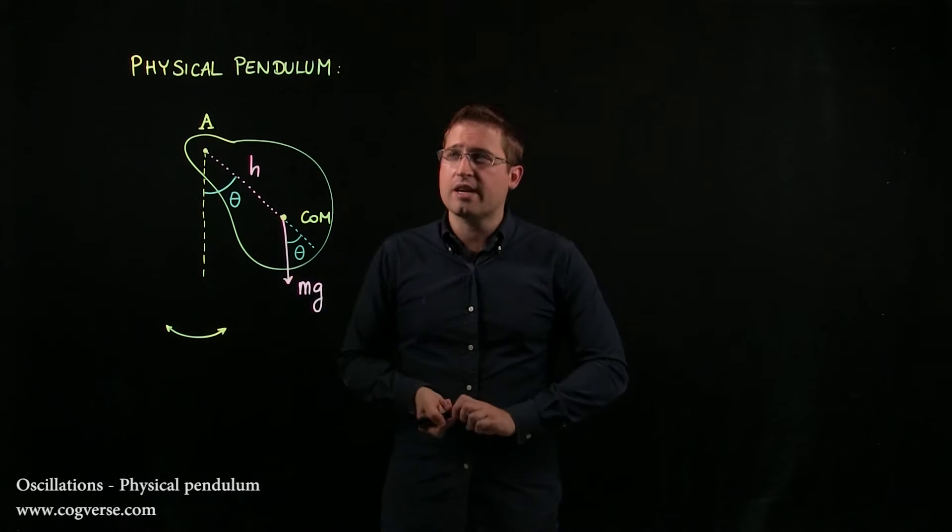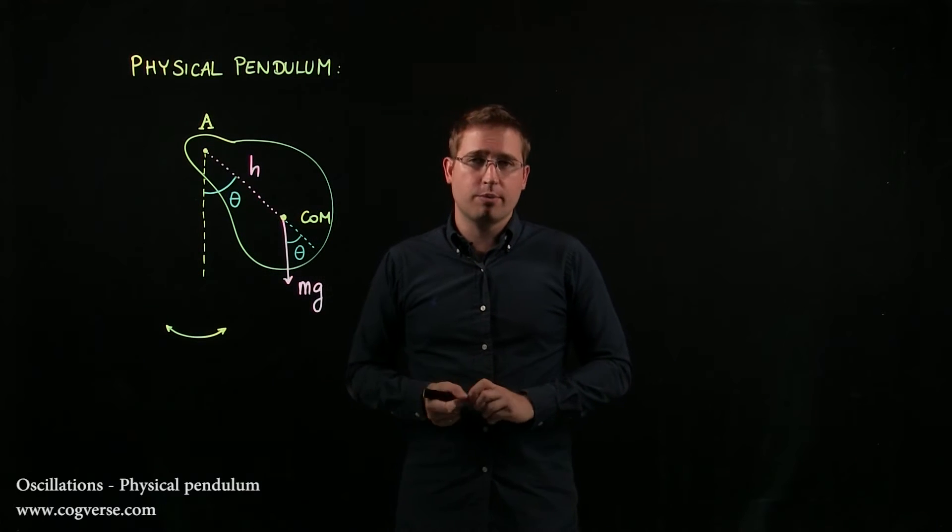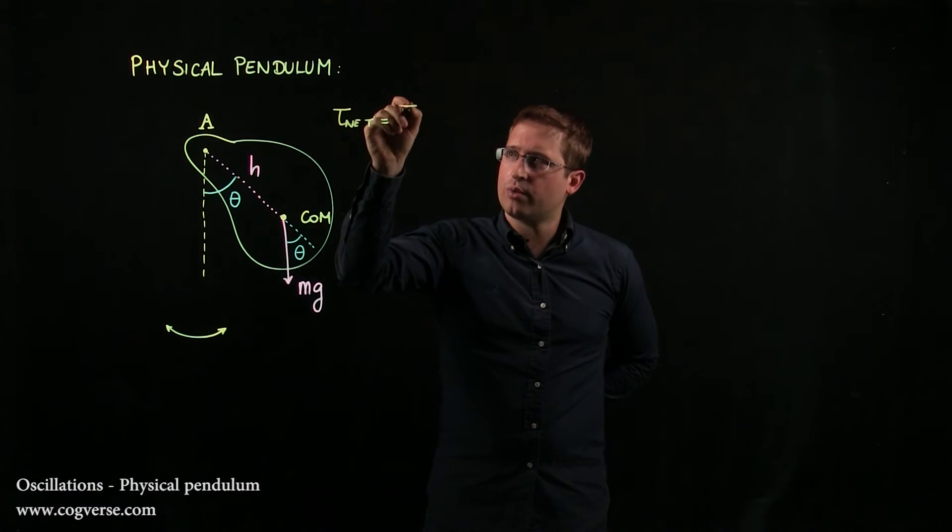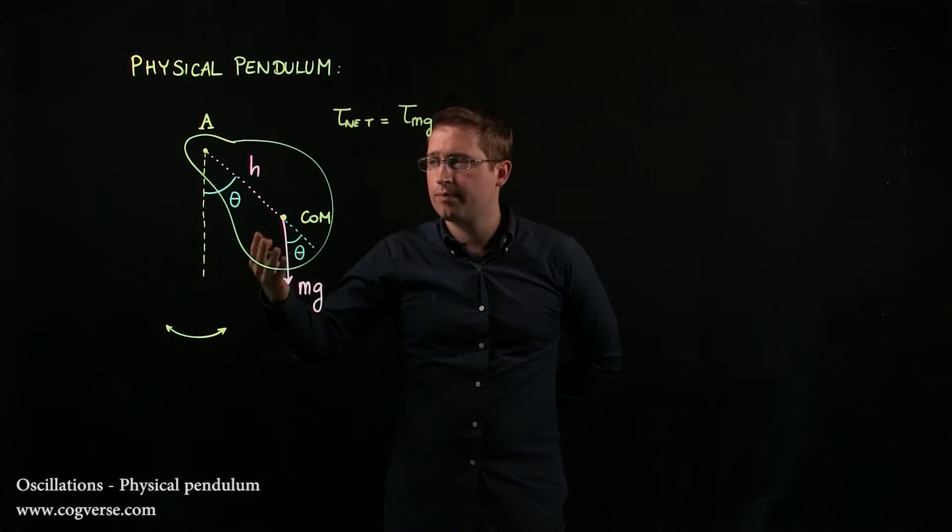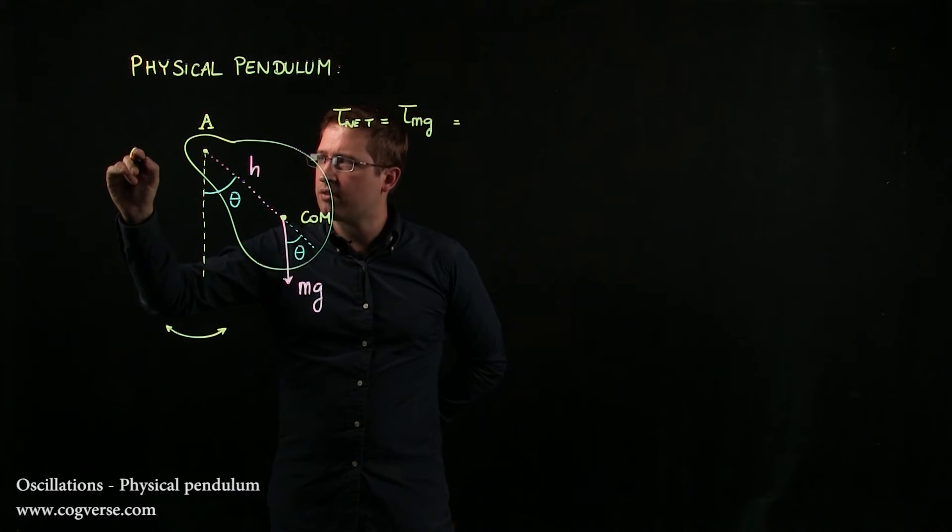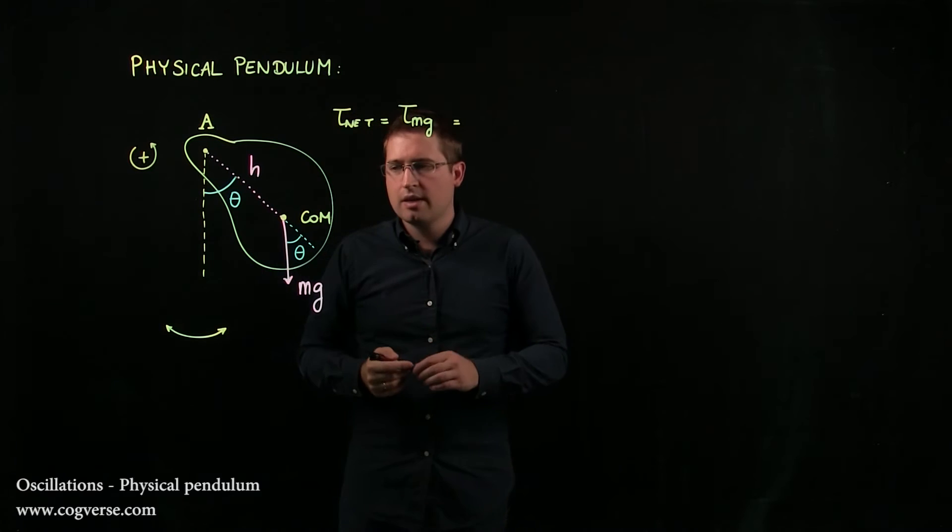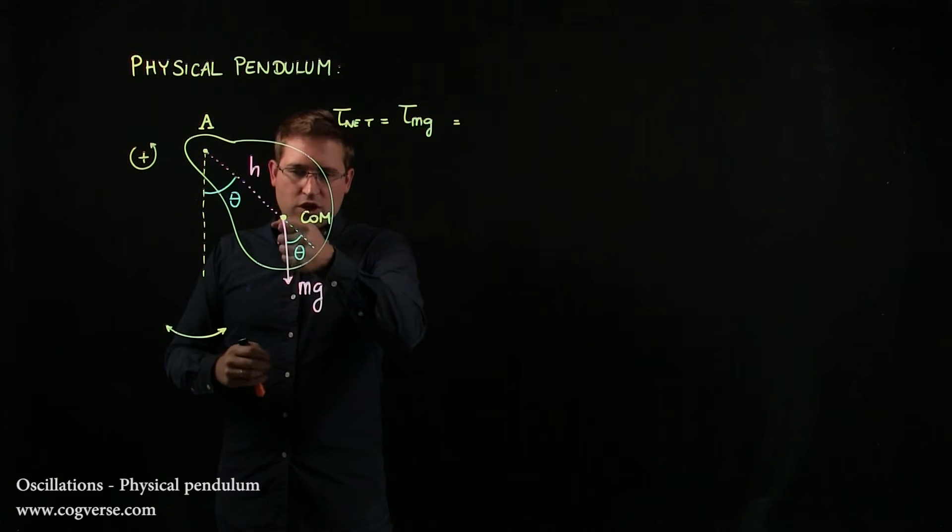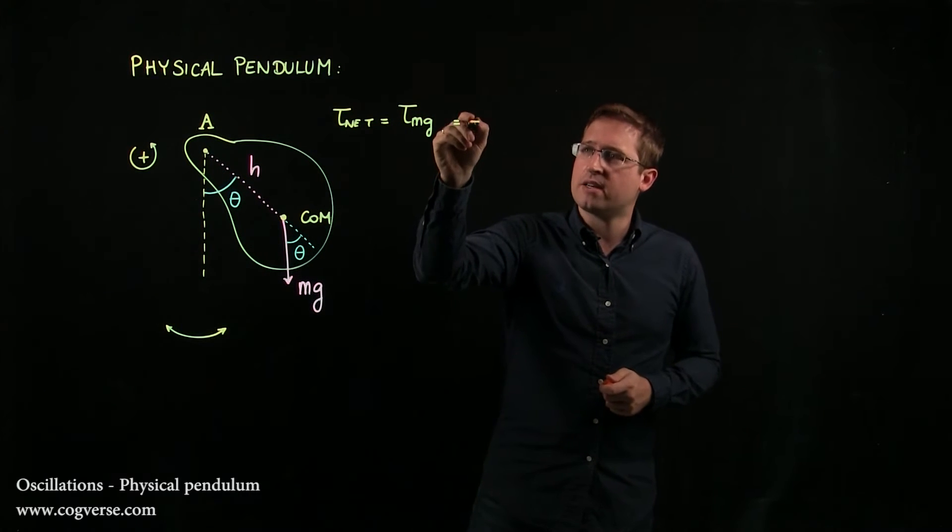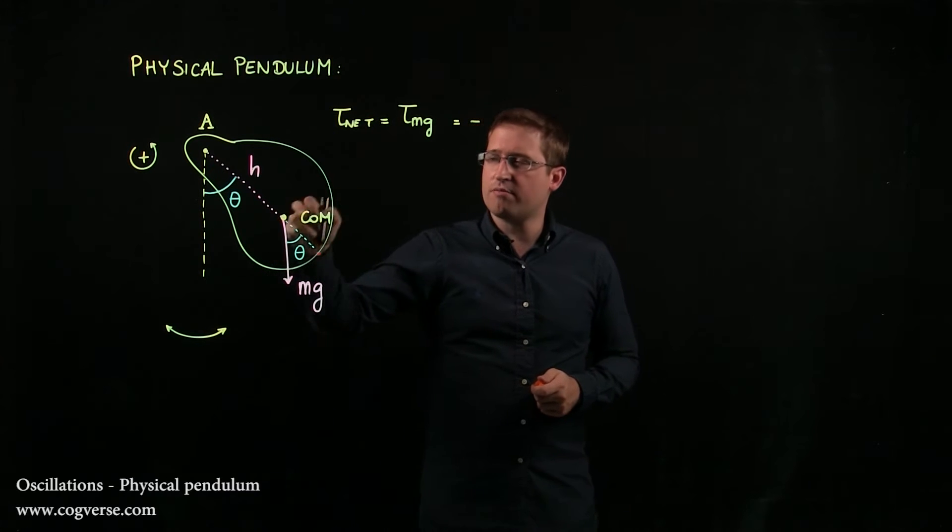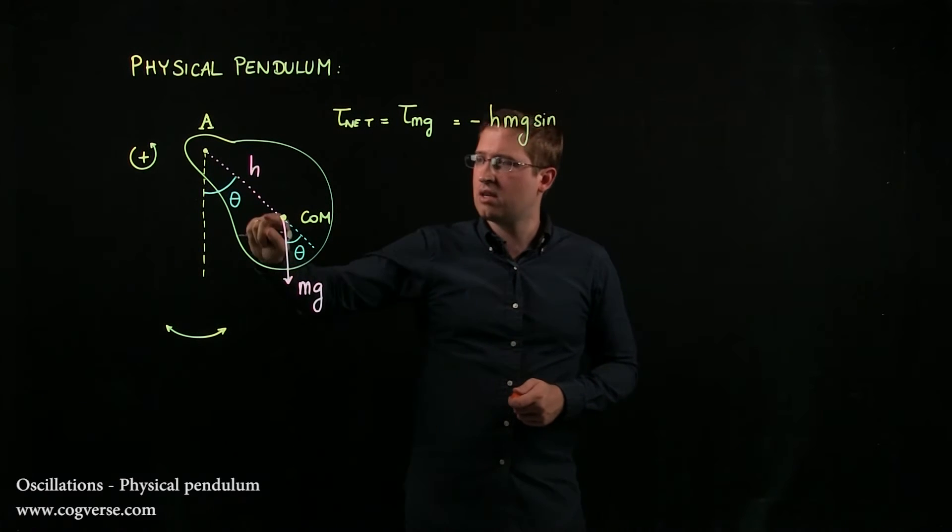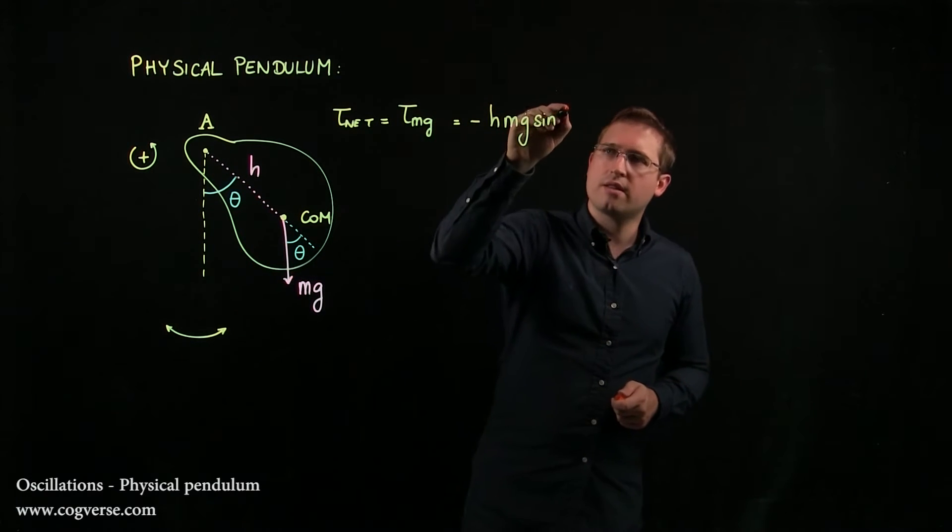So let's apply torque net equals I alpha with respect to the pivot point A. Torque net is just equal to the torque due to weight because there's only one force acting on our pendulum. Now, if we're going to compute torque, we need positive rotation that's counterclockwise. And here we have mg that tries to pull this whole thing clockwise. That's negative torque. So that's minus the distance between A and the center of mass. That's h, magnitude of the force mg, sine of the angle between h and mg. And that is theta.